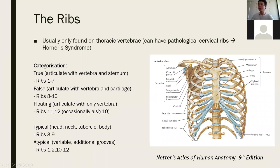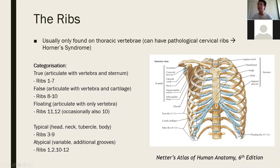False ribs are ribs 8, 9, and 10. Although they come from the vertebral bodies, they don't have direct cartilaginous attachments to the sternum — they attach into a cartilaginous belt, so they're only indirectly attached. Floating ribs are ribs 11 and 12, and these don't have any anterior attachments to any structures. Rib 12 just kind of ends and doesn't really attach anteriorly.